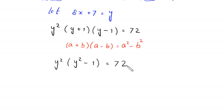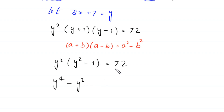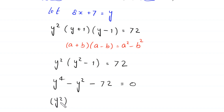Distributing y²: y² times y² gives y⁴, and y² times (−1) gives −y². Moving 72 to the left side, we get y⁴ − y² − 72 = 0. We can write y⁴ as (y²)².